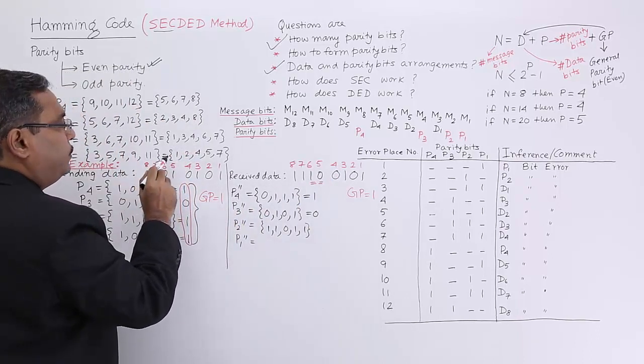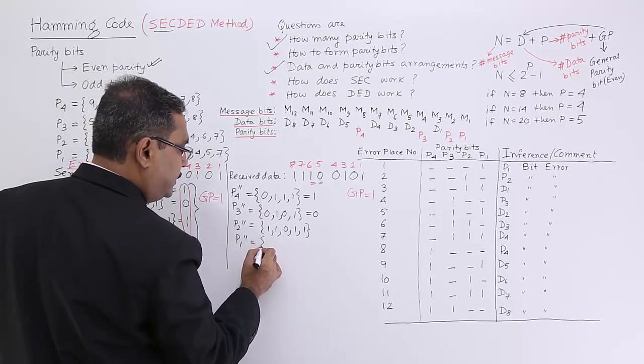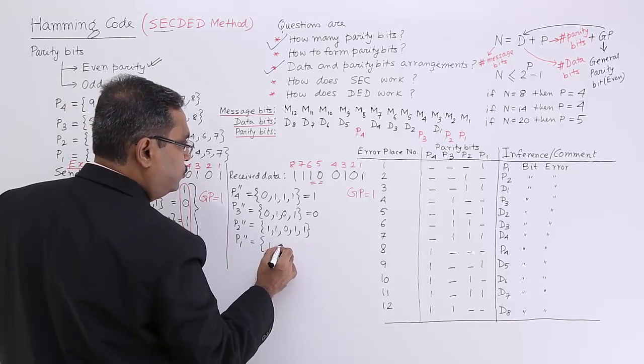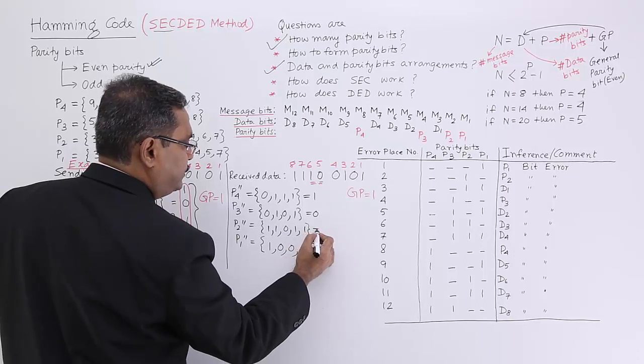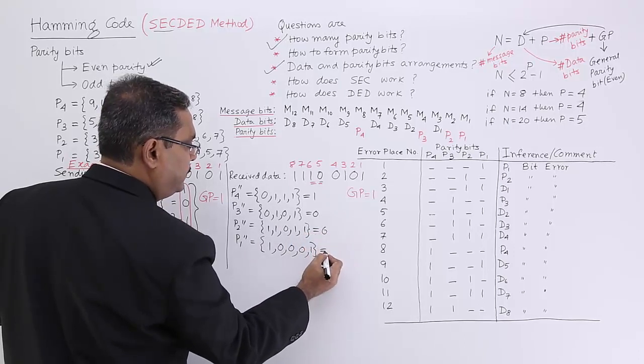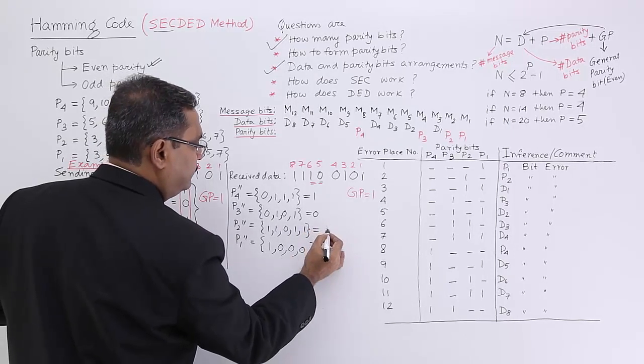Now we are having P1: 1, 2, 4, 5, 7. So here we will be having 1, 2, 4, 5, 7. So the general parity bit will be 0.